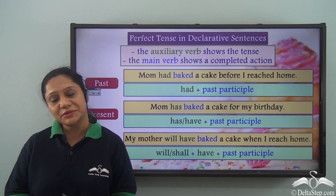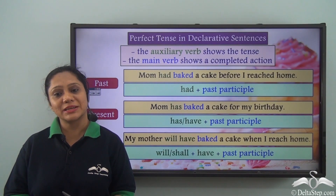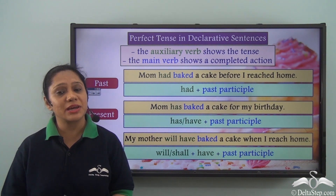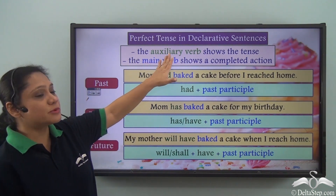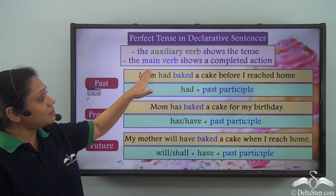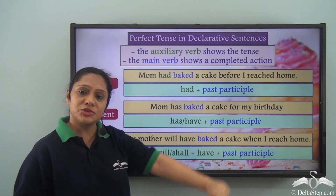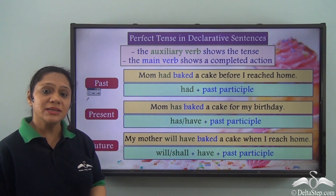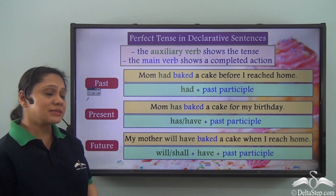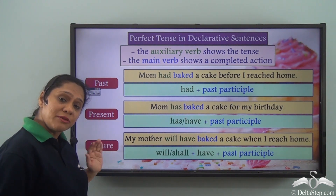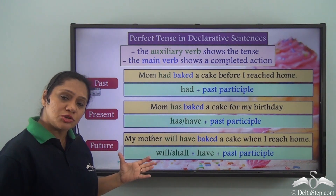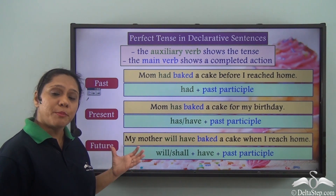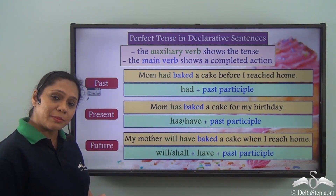We have worked extensively with perfect tenses and we know that in sentences depicting such tense, the auxiliary verb shows the tense and the main verb shows a completed action. Now in this slide there are three declarative sentences portraying the perfect tense in the past, present and future. It also shows the associated verb forms. You can pause the video to go through them in detail.